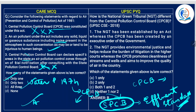Next: How is the National Green Tribunal different from the CPCB? This was asked in 2018. The first statement says the NGT has been established by an act whereas CPCB has been created by an executive order of the government — No, CPCB was created through the Water Pollution Act, so that statement is gone. The NGT provides environmental justice and helps reduce the burden of litigation in the higher courts, whereas CPCB promotes cleanliness of streams and wells and aims to improve the quality of air.